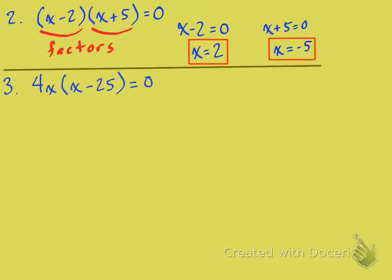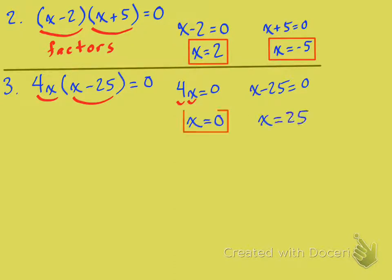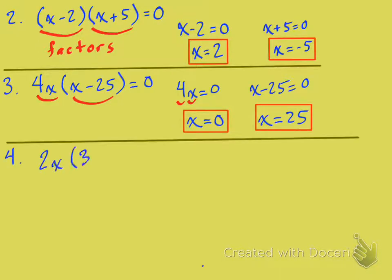Next example: 4x times (x minus 25) equals zero. There are your factors — 4x and (x minus 25). Set each factor equal to zero. That gives you x equals zero and x equals 25. Those are your solutions. The zero product property is great.